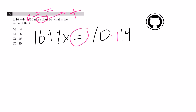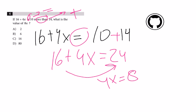When we solve this equation, we get 16 plus 4x equals 24. Move 16 to the other side to get 4x equals 8, divide both sides by 4, and x equals 2.